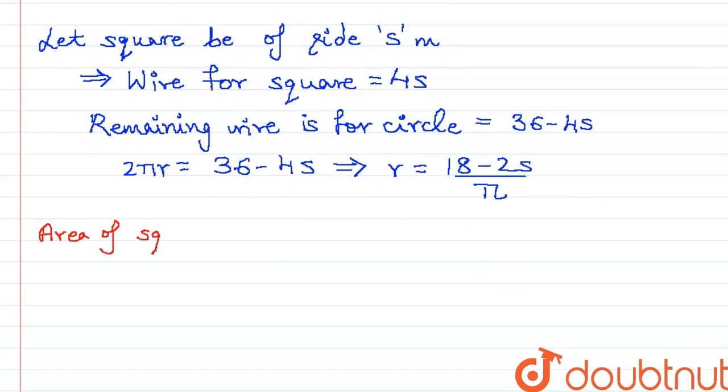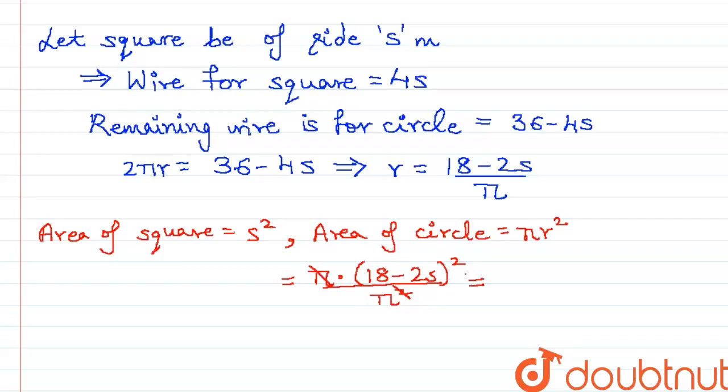The area of the square is simply s squared. The area of the circle is πr². Substituting the equation of radius here we get π times (18 minus 2s)² by π². Cancelling one π we get this as 324/π plus 4s²/π minus 72s/π.